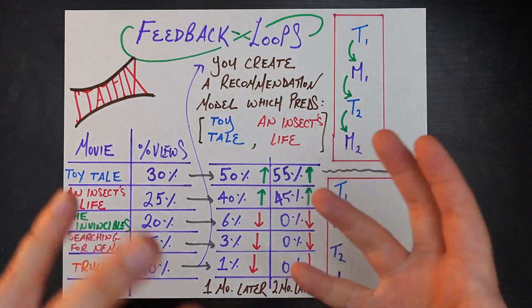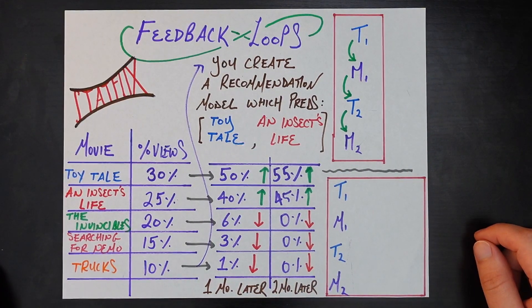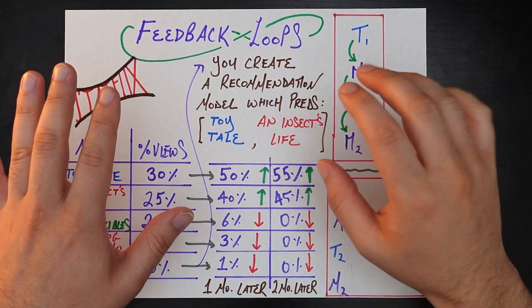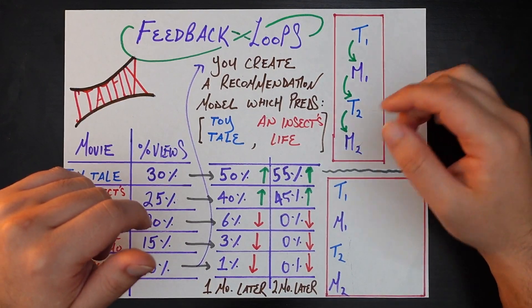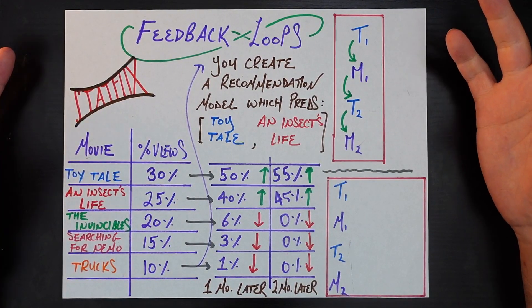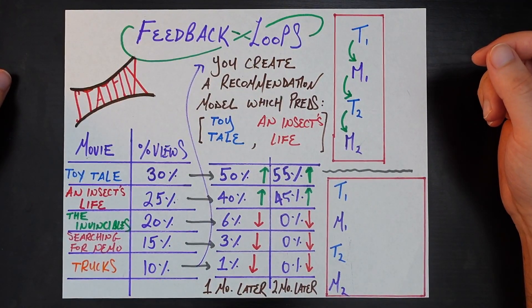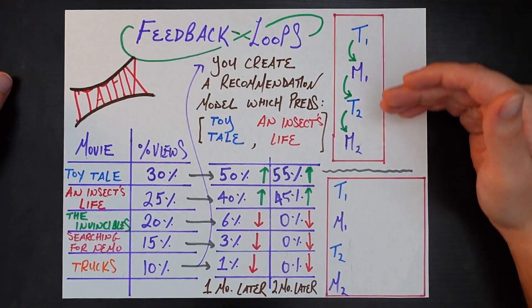This problem goes by a lot of different names — there's no standardized name for it. One you'll hear is feedback loops, which makes a lot of sense because when you're training the second version of the model, you're using training data generated by the first version of your model. Another name is selection bias — the training data fed into the second version of your model has a selection bias induced by what the first version of your model recommended.